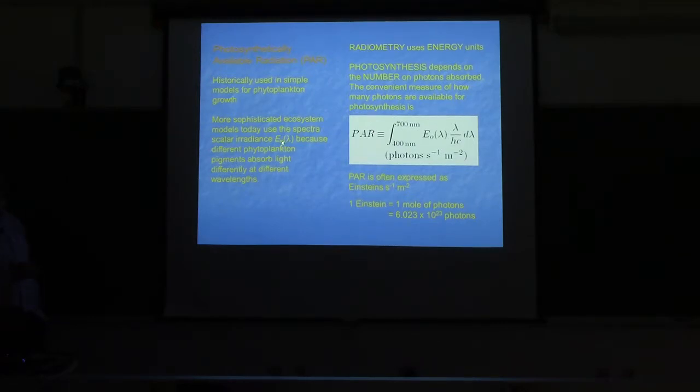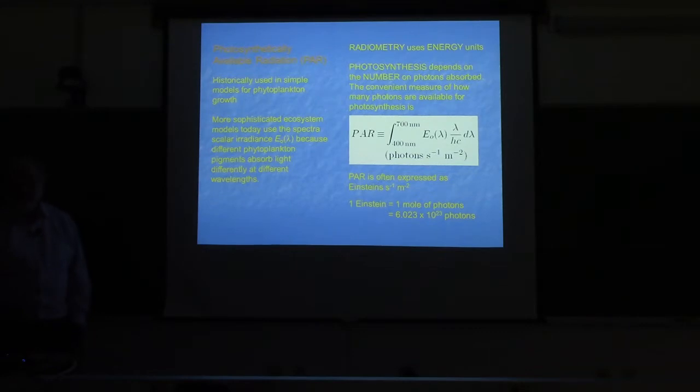They take the E0 radiometric thing, convert it to photons, but don't integrate over wavelength. They use the wavelength distribution of photon scalar irradiance because different phytoplankton have different pigments.